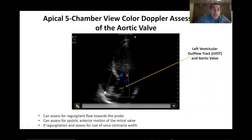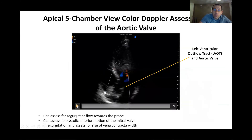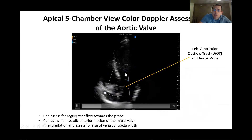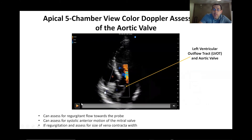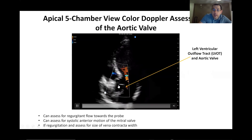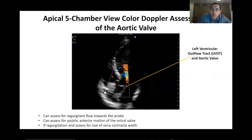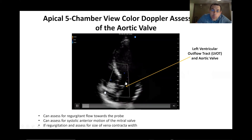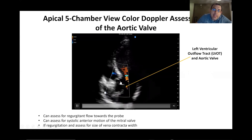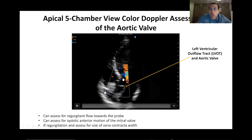By rocking the probe slightly from the apical four-chamber view, we can bring the aortic valve into better view — this is now our five-chamber view. Here is the aortic valve and the left ventricular outflow tract. We look for the same parameters: any regurgitation with flow going back towards the probe after ejection, and a vena contracta. We can also assess for obstruction of the left ventricular outflow tract by the anterior leaflet — we call that systolic anterior motion, or SAM for short.